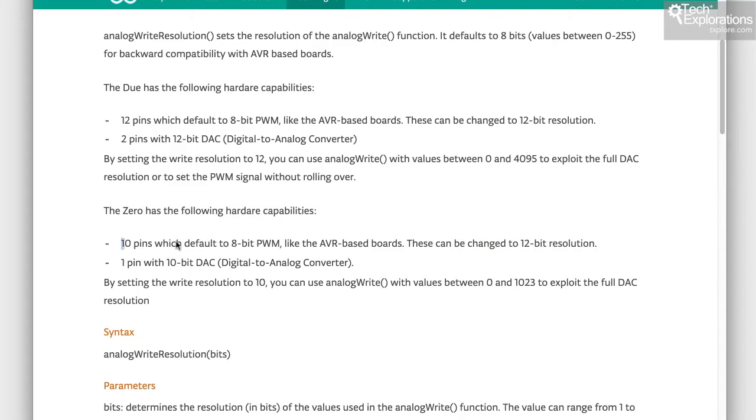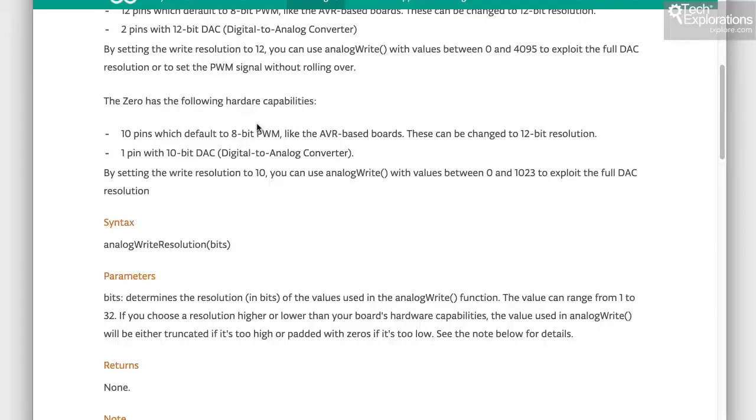So 10 pins have the PWM capability and all of them can be configured to whichever resolution you like up to 12 bits. Let's have a look at what PWM at 12 bits of resolution looks like by using a demo sketch and my oscilloscope.